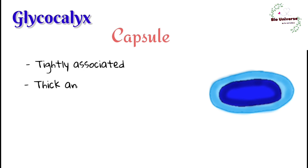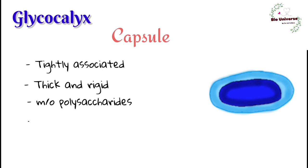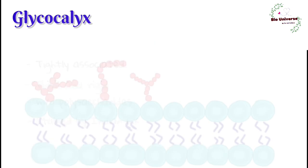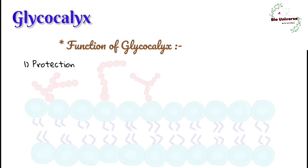Capsule is an organized extracellular layer that surrounds the bacterial cell envelope. It is tightly associated with the bacterial cell; it is a thick, rigid structure. It is generally made up of polysaccharides but also contains some other components depending on the bacterial species. It can be detected under a microscope by staining with Indian ink. It determines the virulence factor of a bacteria and protects it from phagocytosis.